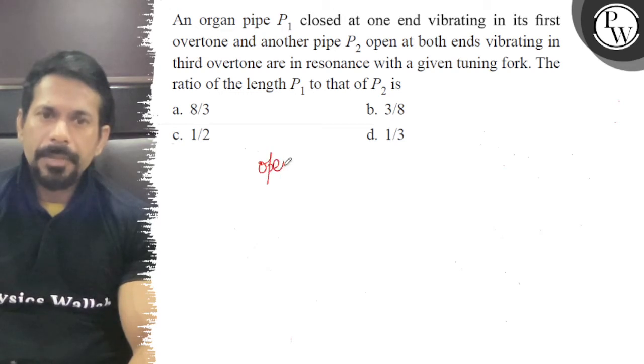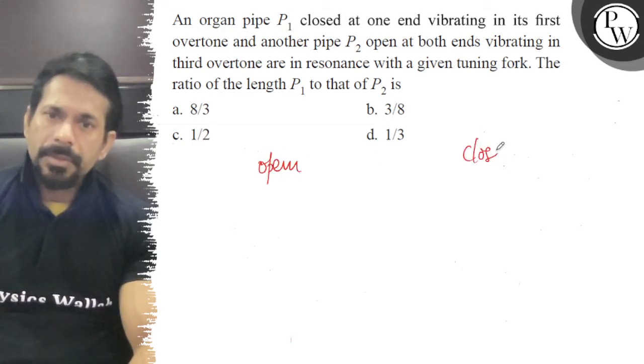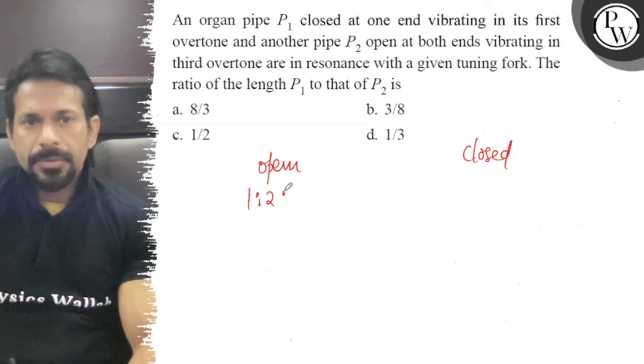So when I write here, I will write open and closed. Open: 1λ/2, 2λ/2, 3λ/2, 4 and so on. And closed: 1λ/2, 3λ/2, 5λ/2, 7.